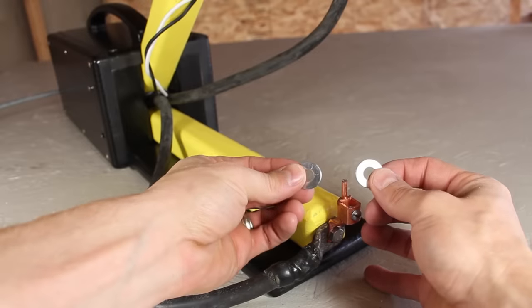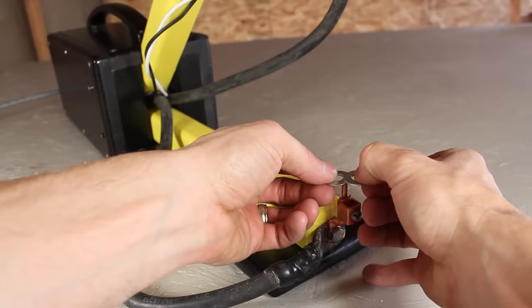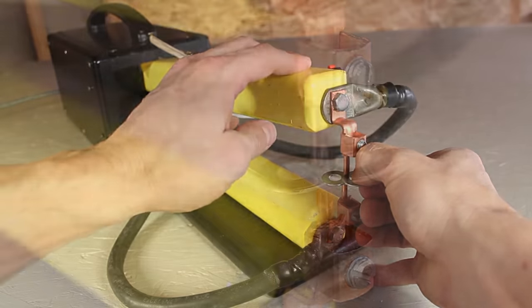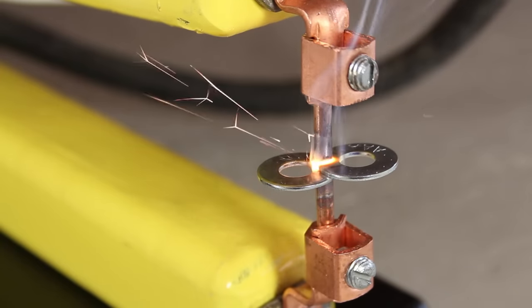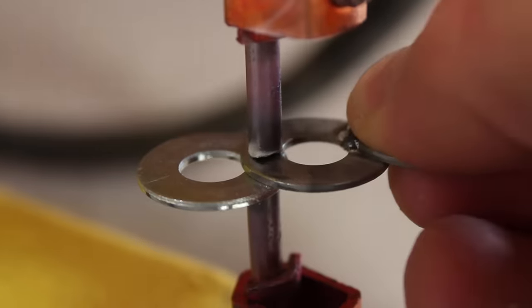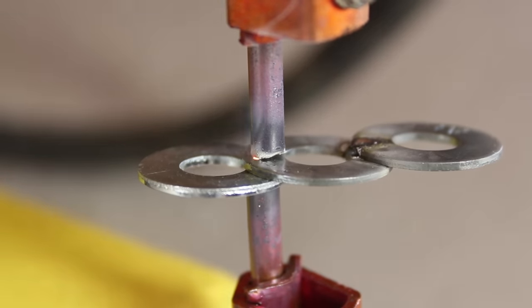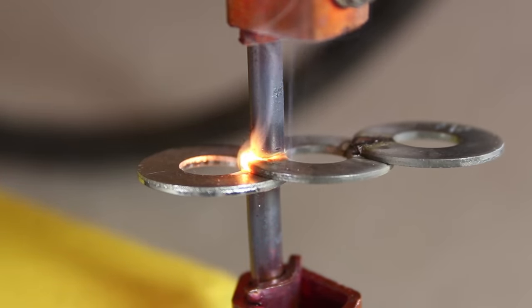I don't have any sheet metal handy, so I decided to try using these washers for my first experiment. The pressure holds them in place hands free, and with the system energized, it only takes about 3 seconds to fuse them together. I'm trying it again with a third washer, being careful not to touch these because they're extremely hot.